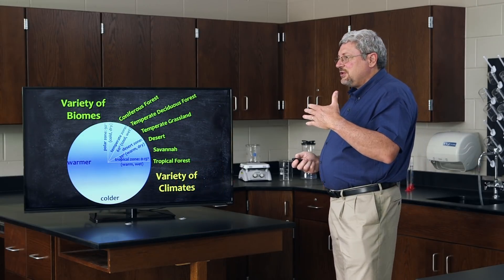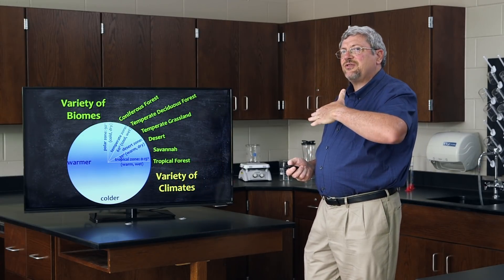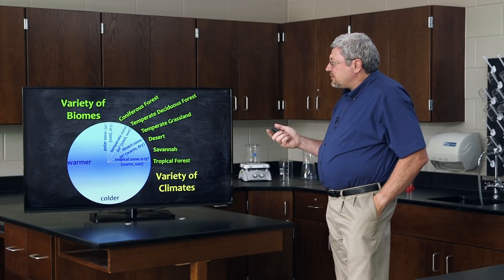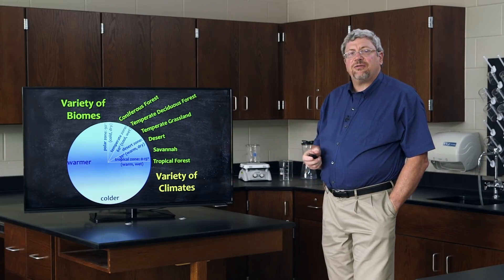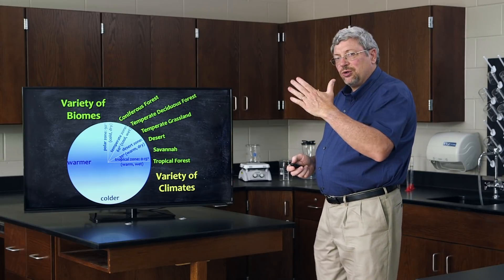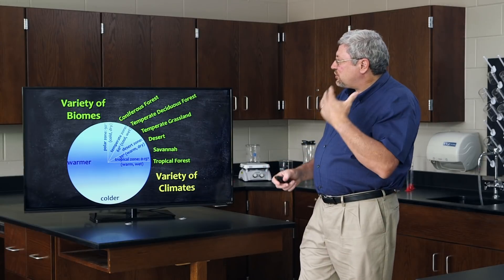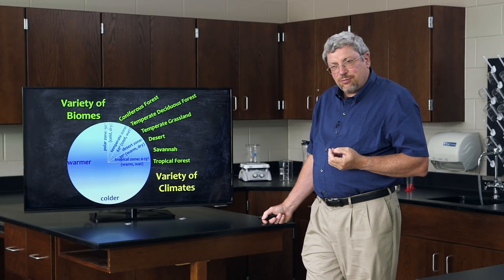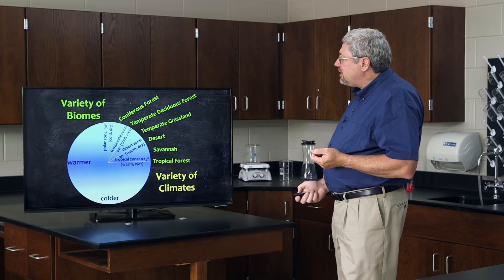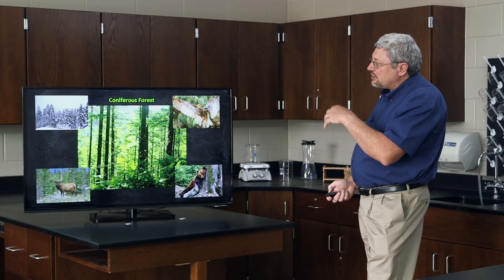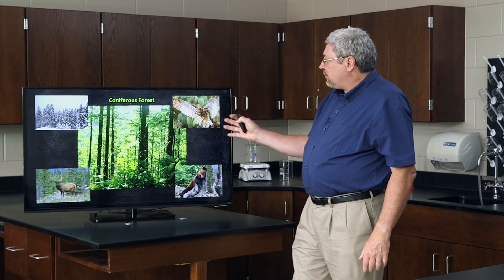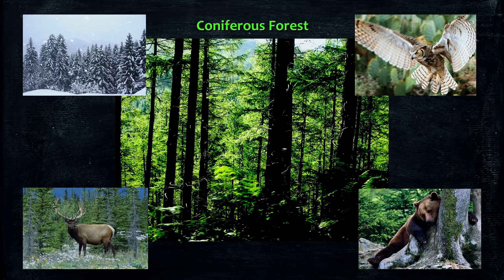Going farther to the north in the northern hemisphere, from the temperate deciduous forest, you move into what's called a coniferous forest. It gets too cold for the deciduous trees, so you're left only with coniferous or evergreen trees. You have forests dominated by firs and pines and that sort of thing, with specially designed organisms to live in those kinds of environments.